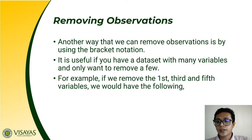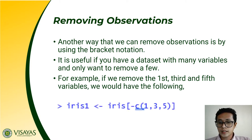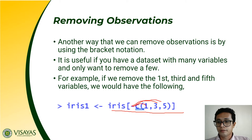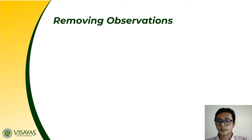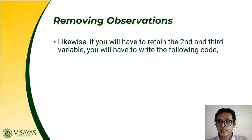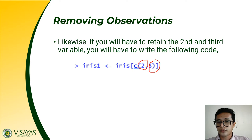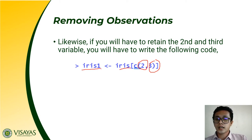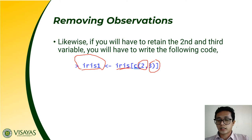Just remember the notation: negative c(1, 3, 5) removes those columns. That is how you remove a specific column or row — include a negative sign. Likewise, if you want to retain only the second and third variables, select only those indices. Your iris1 dataset will then contain only the second and third variables. Note that we did not override our dataset; instead, we created a new dataset named iris1 to hold the result.